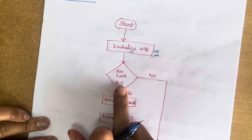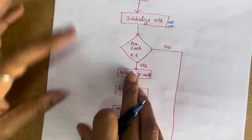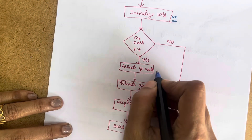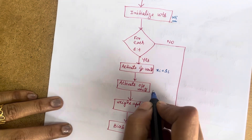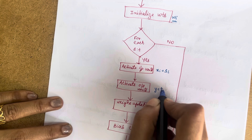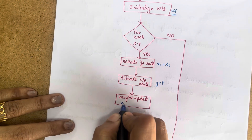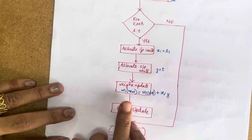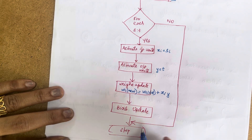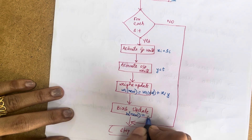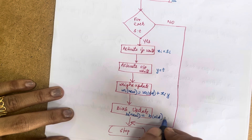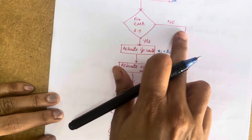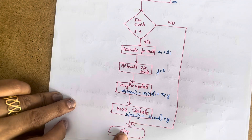For each input-output pair, first activate the input unit: xi = si. Then activate the output unit: y = t. Then perform weight update: w_i_new = w_i_old + xi × y. Also update the bias: b_new = b_old + y. These steps are performed for each input-output pair. If there are no more input-output pairs, stop. This is the basic flowchart for the Hebb network — initialize weights, take one input-output pair, activate input and output units, update weights and bias, and repeat until no more pairs remain.